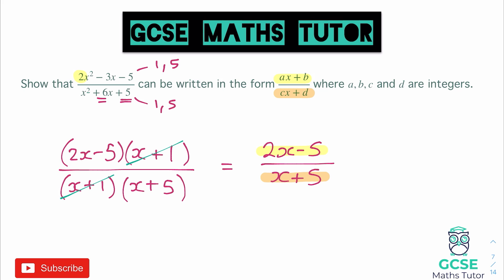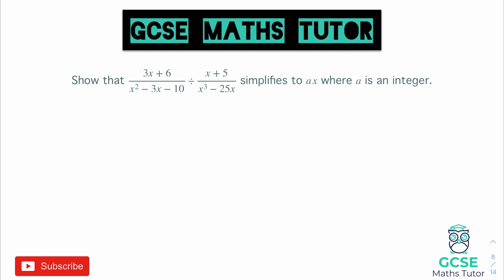Now let's look at our algebraic fraction calculation. This question involves a division and has a particularly nasty part on the bottom — that x cubed minus 25x — which we'll deal with shortly. It says show that this division simplifies to ax, so everything ends up as just something times x where a is an integer. There are lots of different types of these questions: adding, subtracting, multiplying, dividing — I'll link some of the hardest algebraic fraction questions in the description.